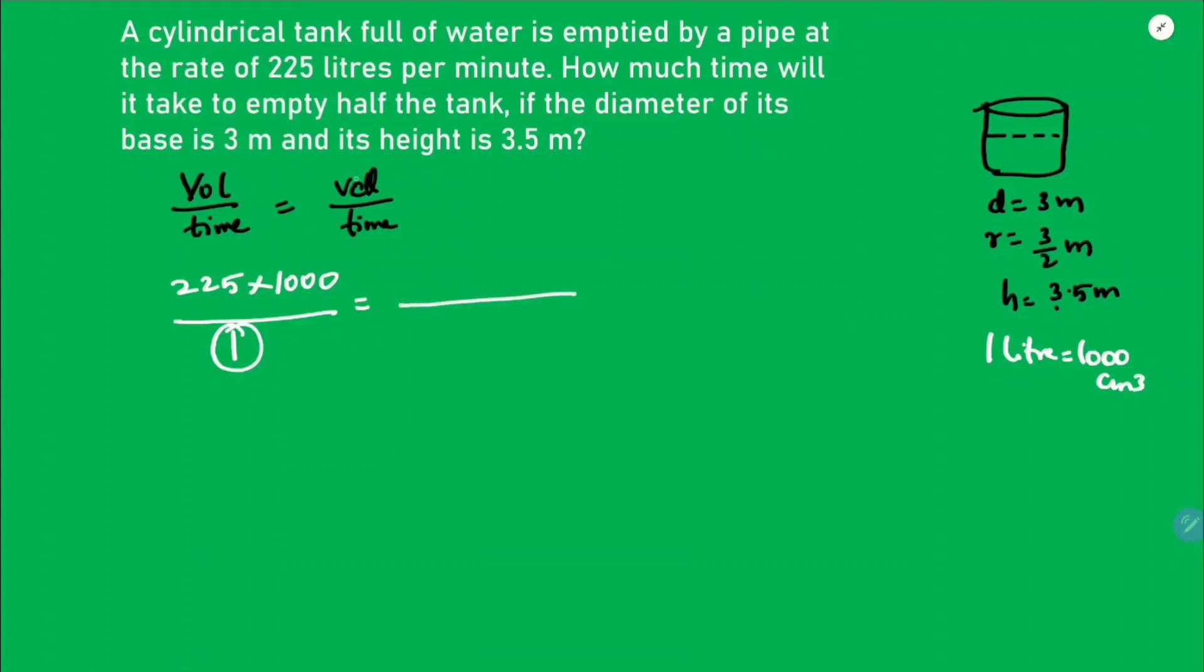It is emptied only half of the tank. Volume formula is pi r square h. I'll take only half, so volume is pi r square h by 2, by time. How much time will it take? They clearly told how much time to empty half the tank, so that's why I took volume of the cylinder by 2.